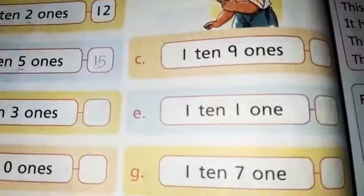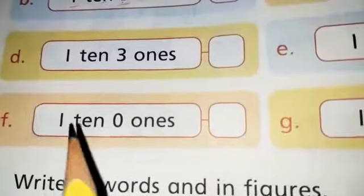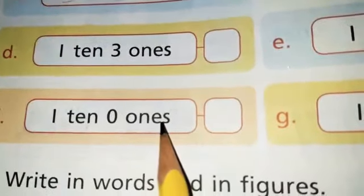Now in part f one ten zero ones. One ten and zero ones becomes ten.